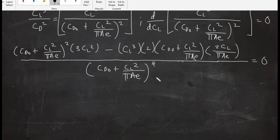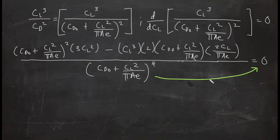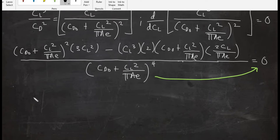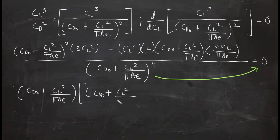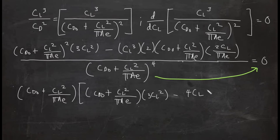We can multiply through by the denominator to eliminate it. We then factor out (CDo + CL²/(πAe)), leaving: (CDo + CL²/(πAe)) times [3CL² minus 4CL⁴/(πAe)] equals zero.